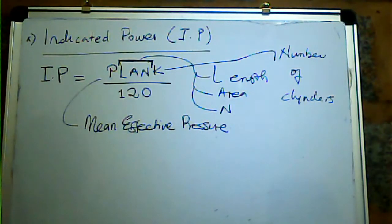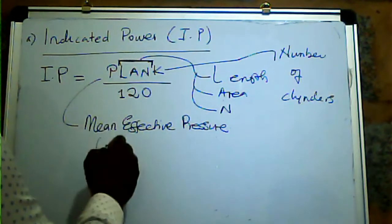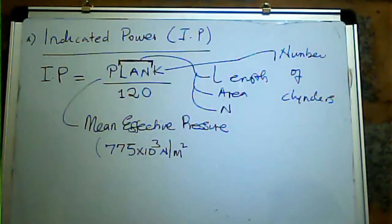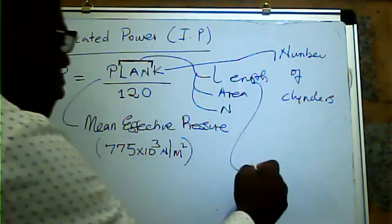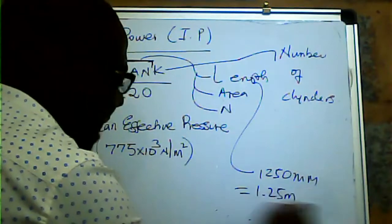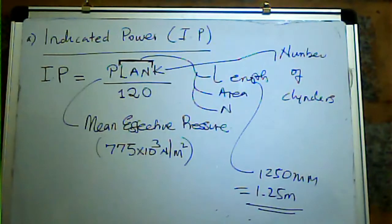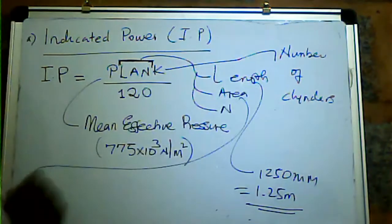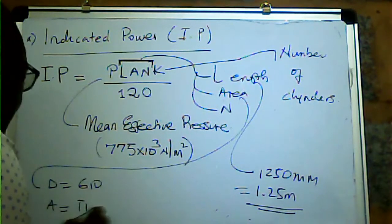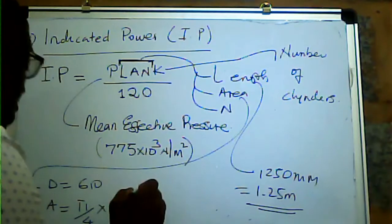In this case our mean effective pressure was given as 775 × 10³ N/m². The length of the stroke was given as 1250 millimetres, which is 1.25 metres — it's a very big engine, it's a marine engine for a ship. The area of a cylinder: we know the piston diameter is 610 mm, so our area would be π/4 × 0.61², which gives 0.2922 m².